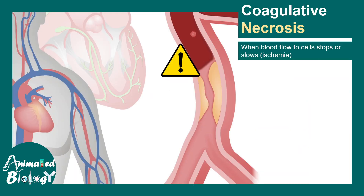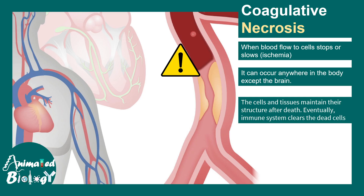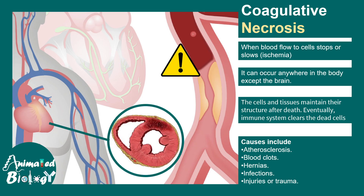Starting with coagulative necrosis: when blood flow to a cell stops or slows down, it leads to a situation known as ischemia. It occurs anywhere in the body but not in the brain. The cells and tissue maintain their structure after death but eventually get cleared up by immune cells. Causes include atherosclerosis, blood clot, hernia, infections, or trauma and injury. Shown here is a cross section of the heart where ischemic injury led to coagulative necrosis — seen as a dark red patch.